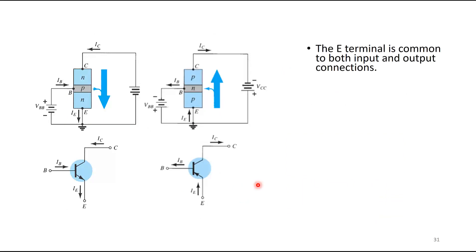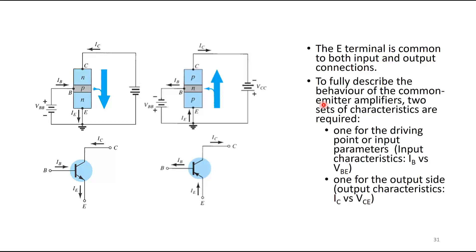The emitter terminal is common to both input and output connections. When it was common base, it was the base terminal that was common to both input and output. To fully describe the behavior of common emitter amplifiers, two sets of characteristics are required: input characteristics and output characteristics, just as in common base. Except now the input is base current IB versus VBE, and the output characteristics is IC versus VCE.